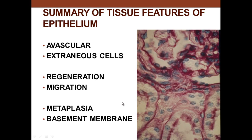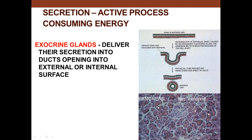A characteristic of epithelium is metaplasia — it can change its shape. Usually it goes from whatever type it is, like in the respiratory tract for a smoker, it will change from pseudostratified columnar ciliated cells to stratified squamous epithelium, which is a protective type. The basement membrane, visible around these cells and in the glomerulus, is stained by PAS. All epithelium sits on the basement membrane.